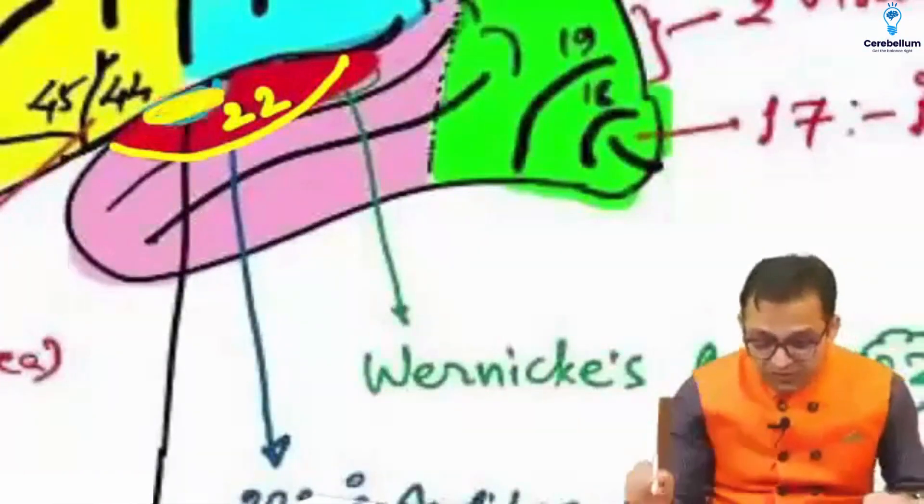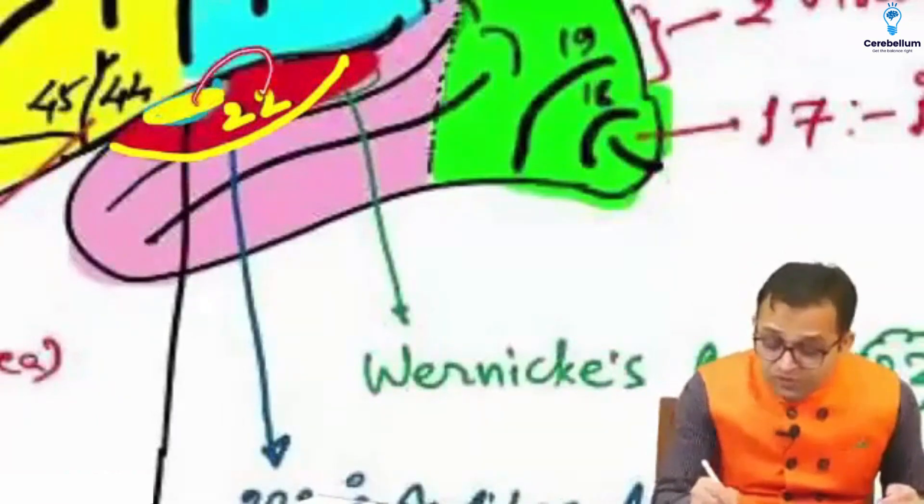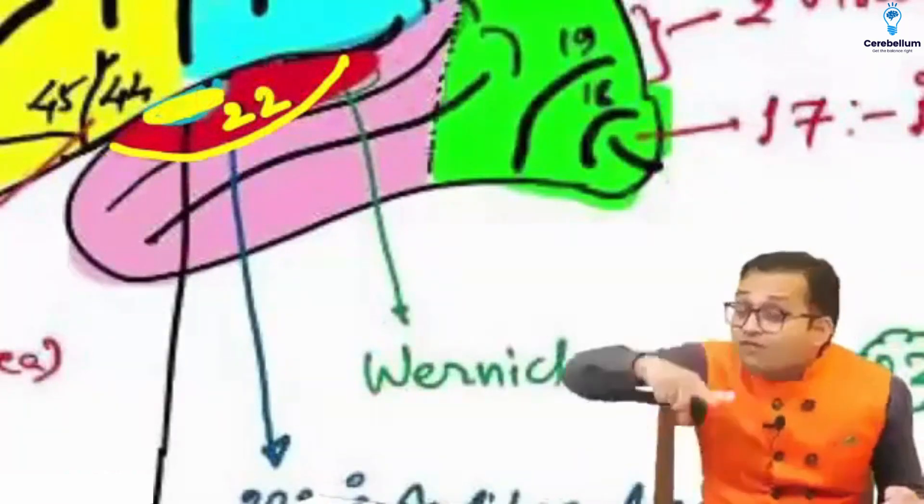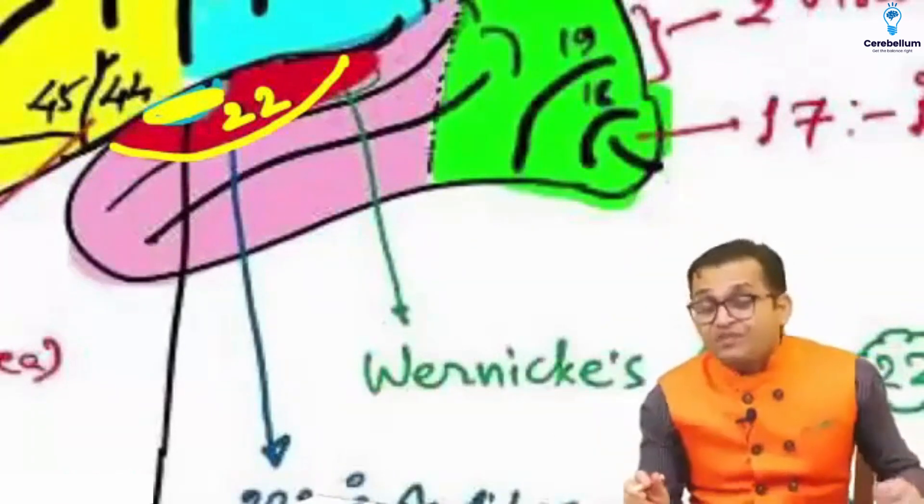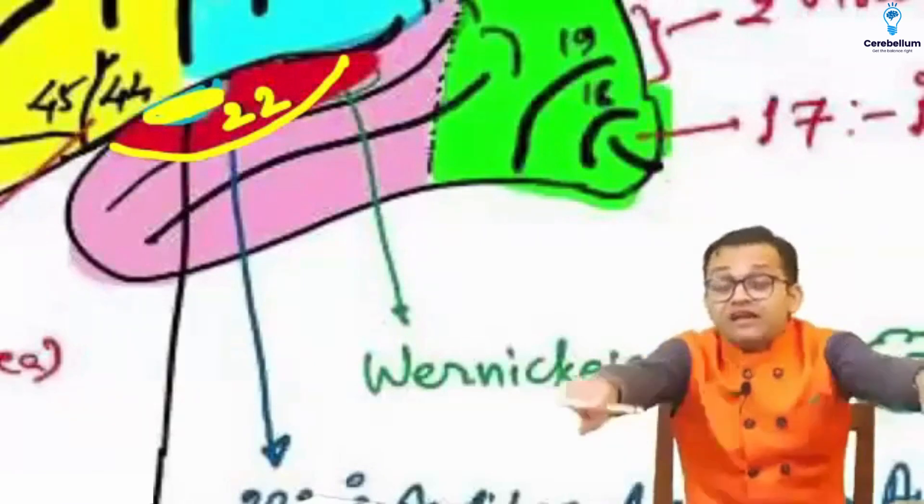It will be heard in the 41, 42. Now the impulse will go to the area number 22. We will correlate with the past memory. We will interpret it. We will do analysis of this sound.